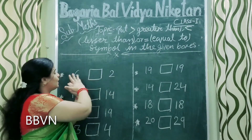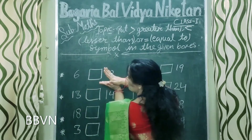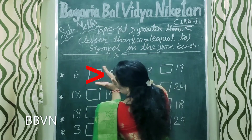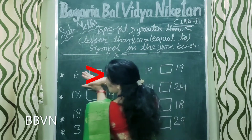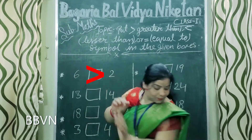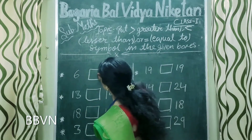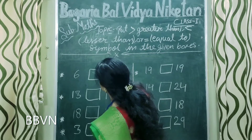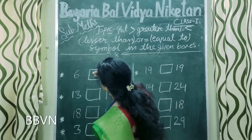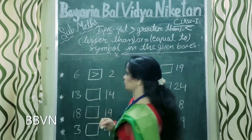Jyadah cheej ko khaega. So, aap ka six — aap dekhiye, alligator is number ko khaega. Alligator aisa hota hai, moong kholta hai, aise khana muh mein jaata hai. Aapko alligator ka face is taraf open mouth rakhna hai. Aise aapko open mouth rakhna hai.